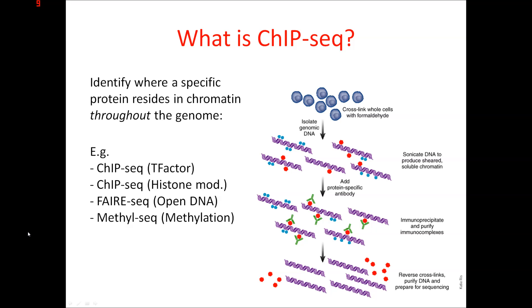Now there are several flavours of ChIP-seq analysis. Typically the investigator is looking to see where transcription factors bind or where histone modifications are located throughout the genome. There are also methods that look for open DNA, such as in ATAC-seq analysis, or methylated DNA in MeDIP-seq analysis. In my example I will be looking at basic ChIP-seq analysis for a transcription factor.